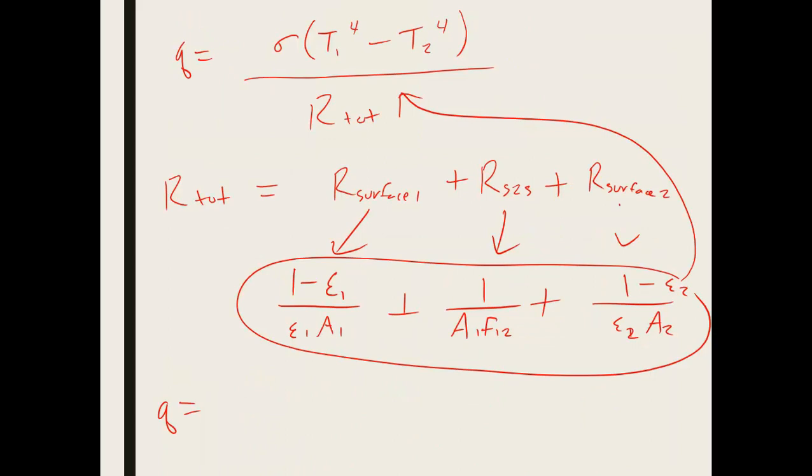So in that case of a two surface enclosure, our q ends up being sigma times t1 to the 4th minus t2 to the 4th, divided by 1 minus epsilon 1 over epsilon 1 times a1.